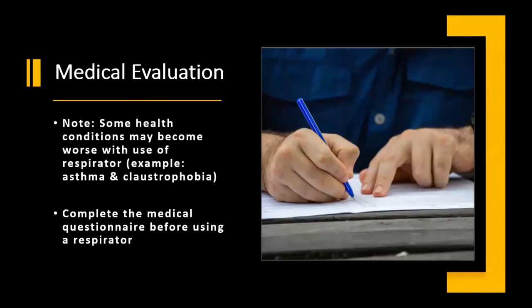The very first thing you must do before working with a pesticide requiring a respirator is complete a medical evaluation with a health professional. This begins with completing a medical monitoring questionnaire about your health, to determine if it's safe for you to wear a respirator. Some health conditions may become worse with respirator use, such as asthma or claustrophobia, so it's important to answer honestly. Not all pesticides require respirators, so it won't impact your employment if wearing one would be detrimental to your health.